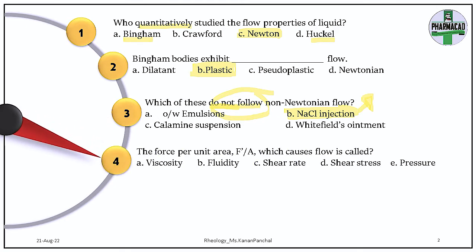Question 4. The force per unit area (F/A) which causes flow is called what? Force per unit area which causes flow — the answer is shear stress. The force which causes flow is shear stress. If it is only force per unit area that is pressure, but the force per unit area which causes flow is called shear stress, and the rate at which it happens is shear rate.